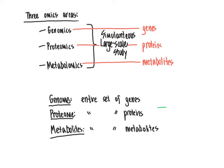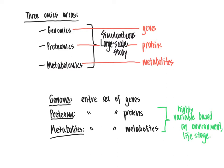When we think about the lifespan of an organism, the proteins and metabolites will vary widely depending on what stage of life the organism is at or what particular stressors it faces at a given time in its life cycle. So the proteins and metabolites are highly variable based on things like the environment, different life stages, and a variety of other variables, whereas the genome — the entire set of genes — is nearly constant over the course of an organism's life.